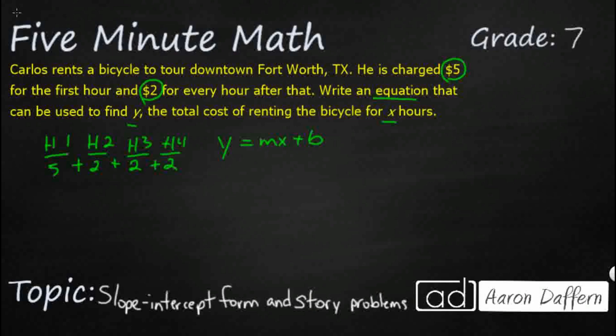So we've got two variables here. We know we've got y, and that is our total cost. How much does the total bicycle rental cost? And then we've got mx. So this x is going to be, and they give that to us in our story problem, hours. So how many hours is Carlos going to rent the bicycle?